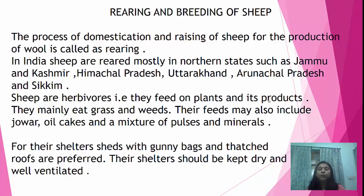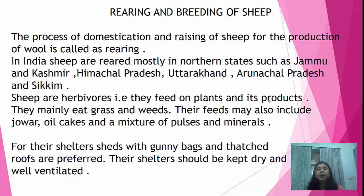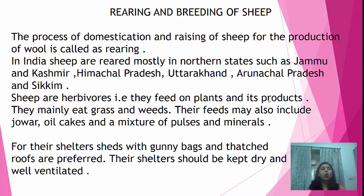Now, coming to the feeding habits of sheep. Sheep are herbivores, meaning they eat plants and plant products. Their main food is grass and weeds — weeds being unwanted plants. Their feed may also include jwar, oil cakes, and a mixture of pulses and minerals. Oil cakes are what is left over from seeds after the oil has been extracted.